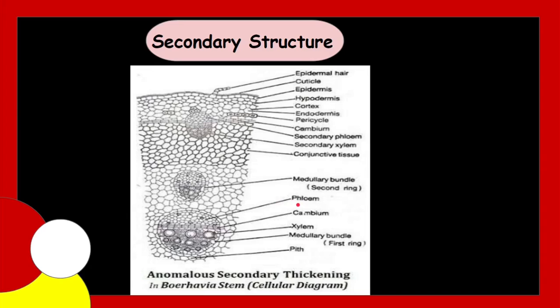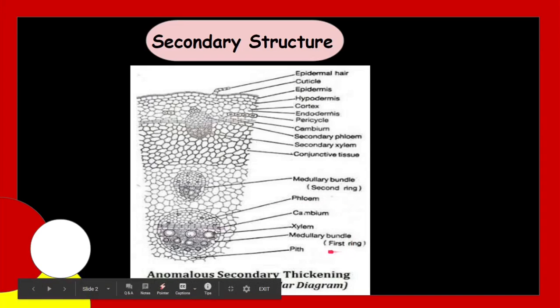The new cambium strip develops from parenchymatous cells produced by first cambium ring. Here is the first cambium ring, this one and this is the second ring. Clear students?